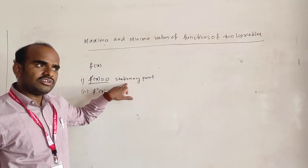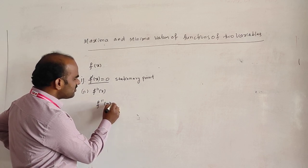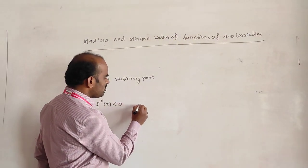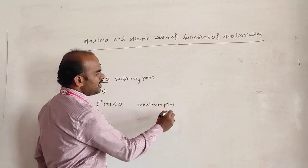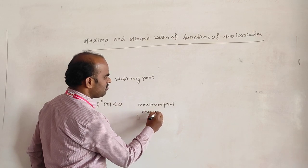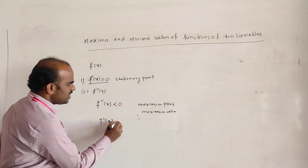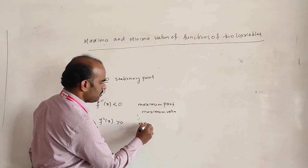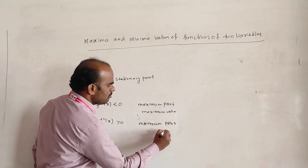For each stationary point, we evaluate f double-dash of x. If f''(x) is less than 0 at the stationary point, that point is called the maximum point and the value of f(x) at that point is the maximum value. If f''(x) is greater than 0, then that value of x is the minimum point and the corresponding value is the minimum value.